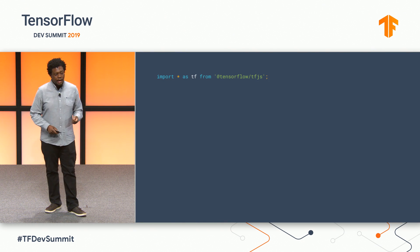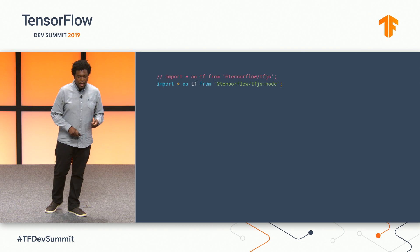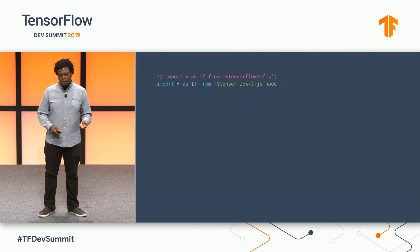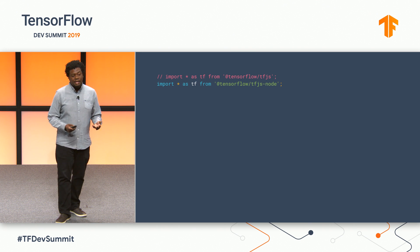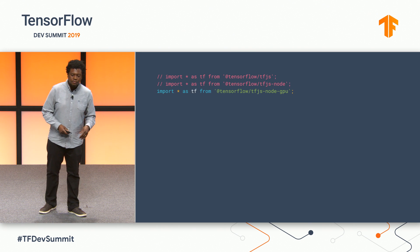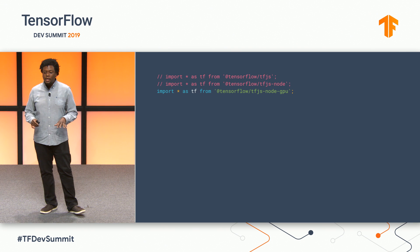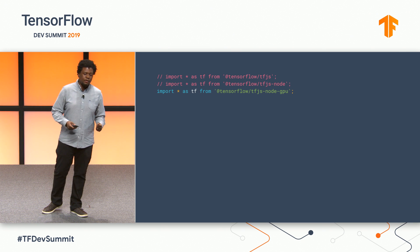The first step is to import the library. When working in Node.js, you can also use the Node.js bindings, which execute the TensorFlow operations using native compiled C++ code. If you're on a system that supports CUDA, you can import tfjs-node-gpu to get CUDA-accelerated performance when doing training or inference.